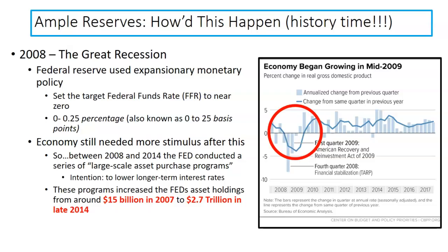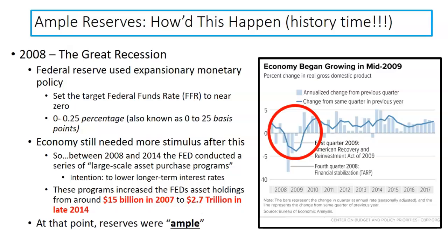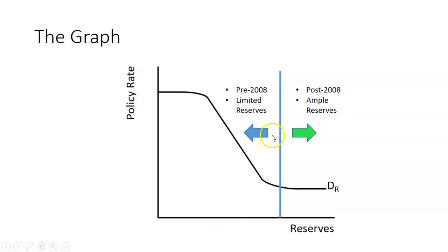Just how large were these programs? The programs increased the Fed's asset holdings from $15 billion in 2007 to $2.7 trillion in late 2014. There are a thousand billions in a trillion. So if we simplify — say each asset is a dollar — in 2007 there was $15 billion of currency, and within seven years that increased to $2.7 trillion, or $2,700 billion. At that point, the reserves — the amount of money available to the banks — was ample, more than enough. Pre-2008 is the limited reserves, the downward sloping portion. Post-2008 we have ample reserves, that $2.7 trillion in U.S. securities.